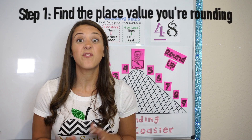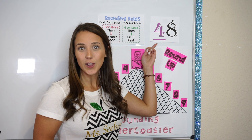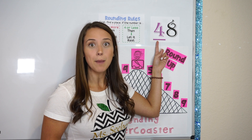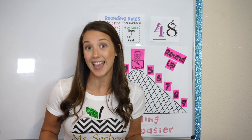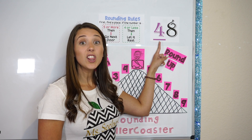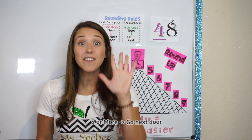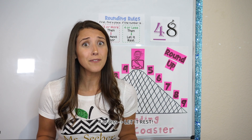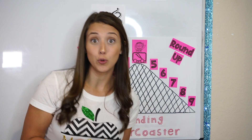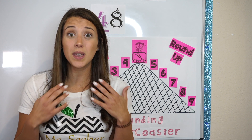My first step to rounding is finding the place value that we are going to be rounding. So when we're looking at the number 48, you can see that the 4 is underlined. When a number is underlined, that means that is the place value that we are going to be rounding. We completed my first step — we found the place value that we are rounding, which is my tens. Now, we need to look at the number that is next to or to the right of my number. If the number is 5 or more, you go next door. But if the number is 4 or less, we let it rest.